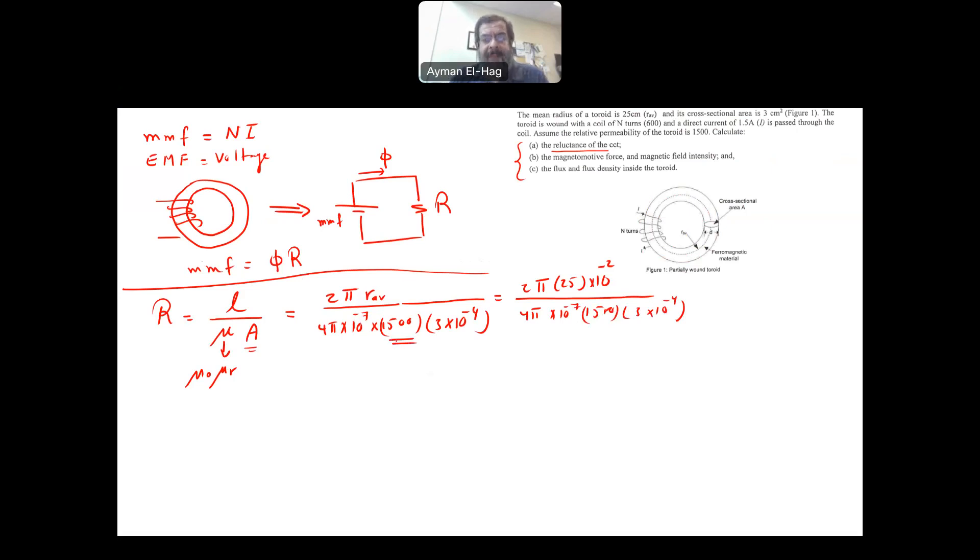Now, what is this relative permeability? This is the property of magnetic materials. The higher the value, the easier the flux can go through the material. And you can see here as the relative permeability goes up in the values, the reluctance will be reduced.